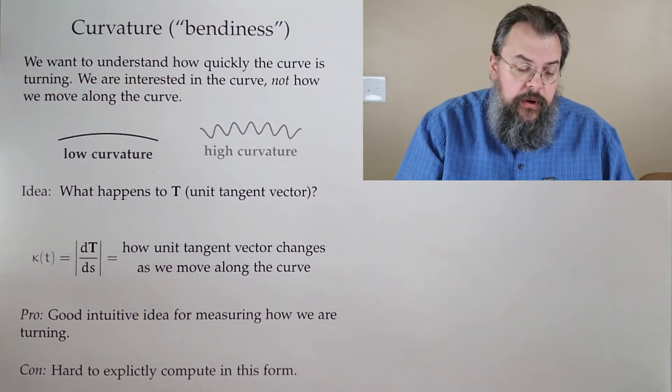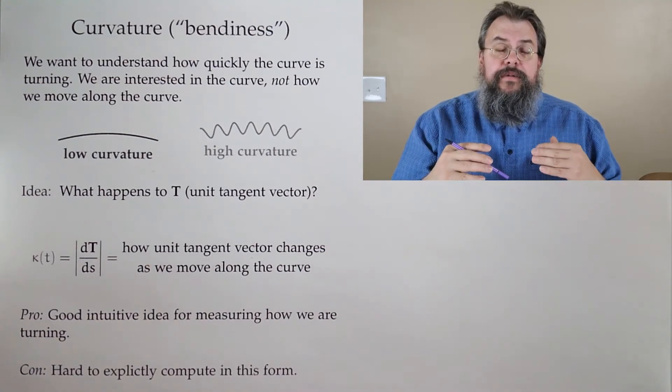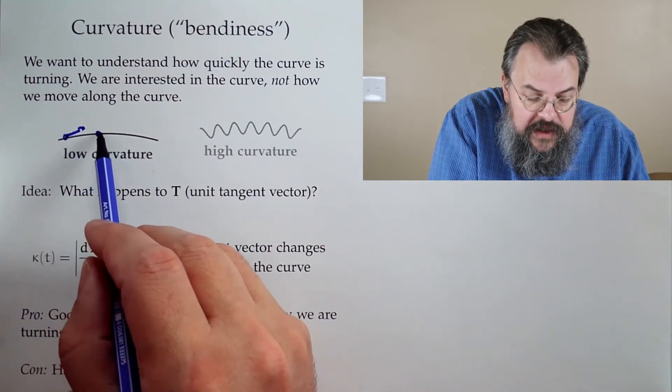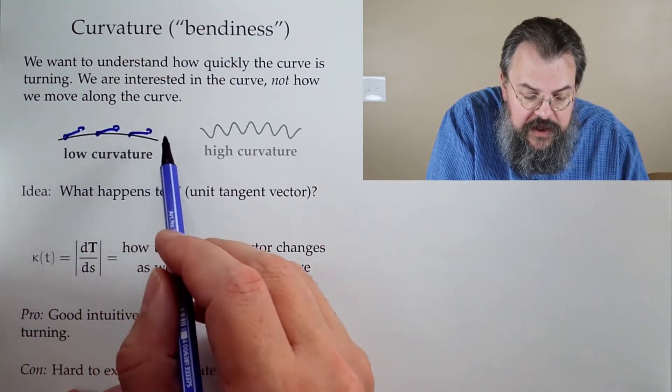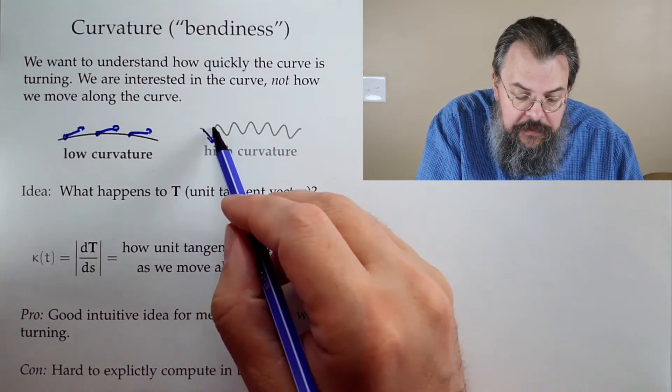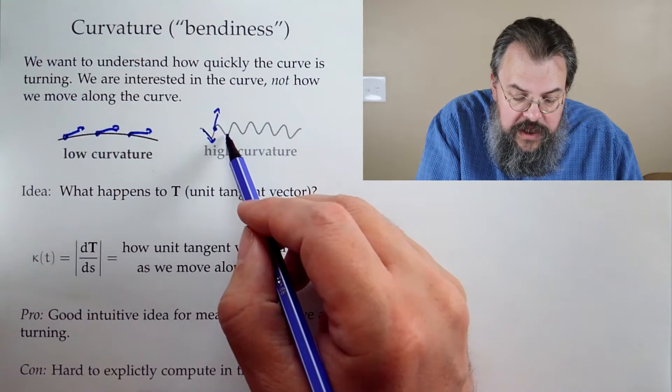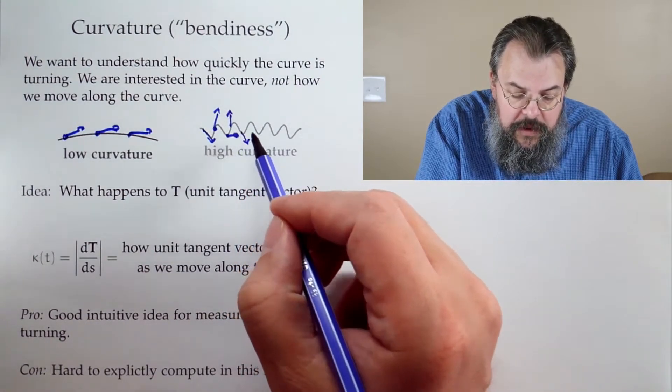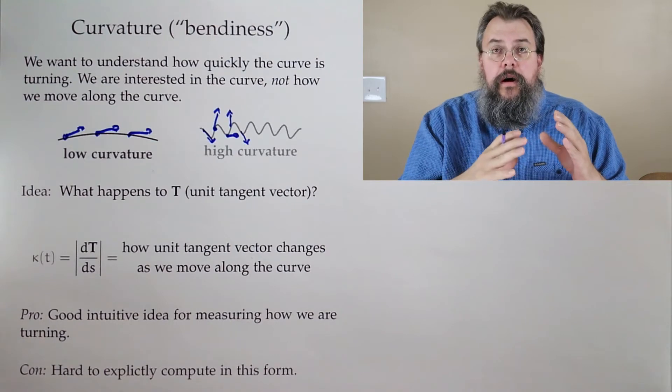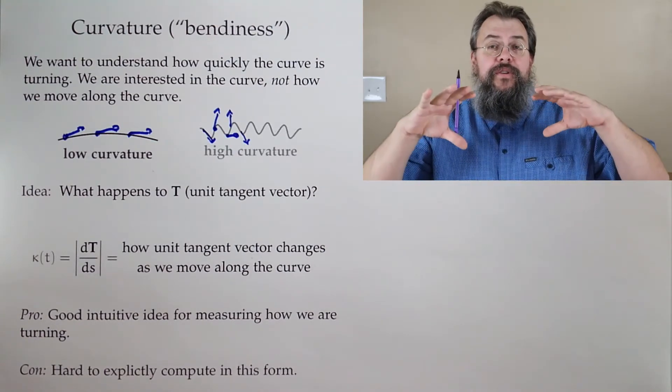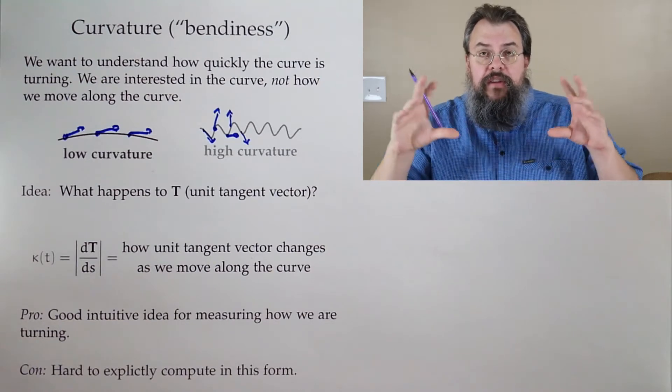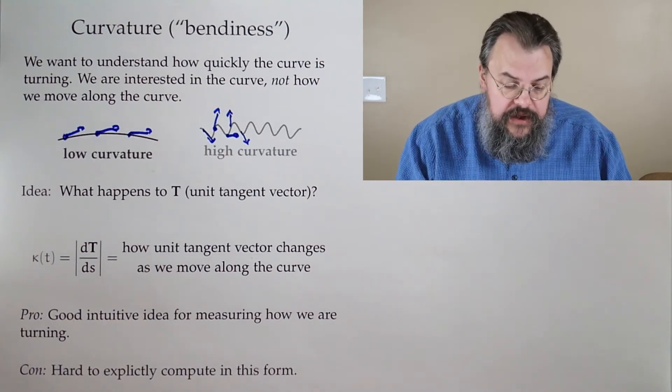Our idea is to look at what's happening in terms of the direction of our tangents. We can move along here and look at our directions of our tangents. When we have low curvature, our directions of tangents are changing very slowly. On the other hand, when we have high curvature, our directions can change very fast, depending upon what time we take a look.